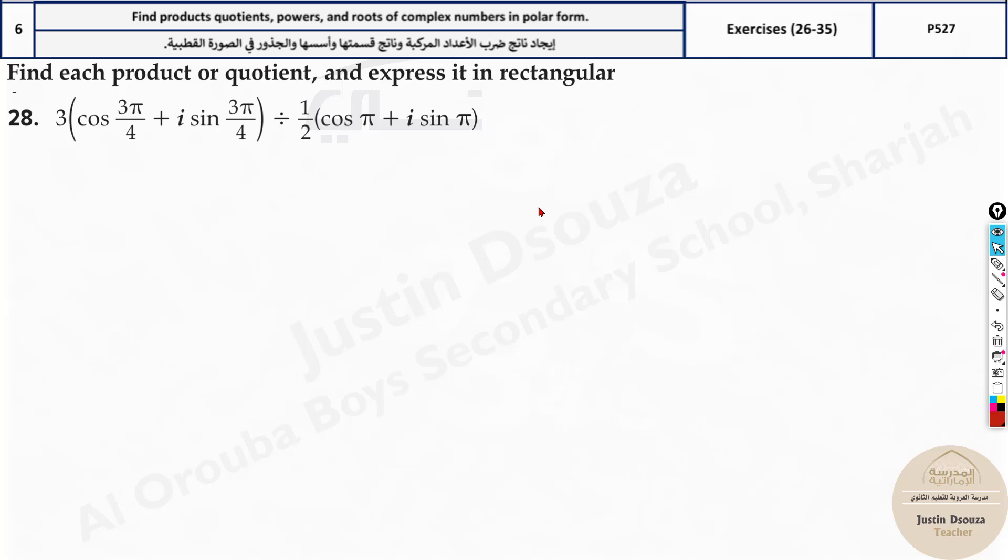Now we have division. So let's do this problem. Same concept but the formula is different. It is r₁/r₂. Here we have cos(θ₁ - θ₂), and it's plus i sin(θ₁ - θ₂). So this is the formula. Now we will substitute. We need to divide. This becomes r₁, θ₁, θ₁; the divisor becomes r₂, θ₂, θ₂. So r₁ is 3 divided by 0.5, or you can write 1/2, and that goes up. Anyways the answer will be 6.